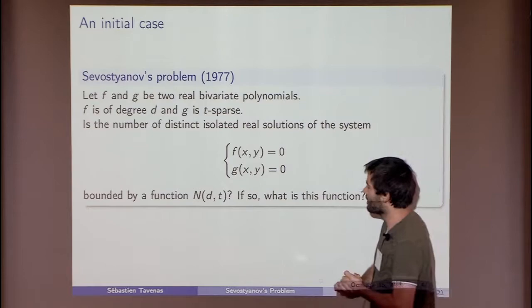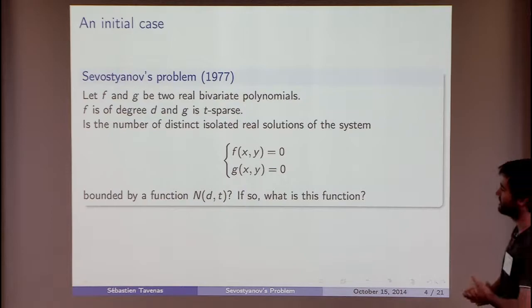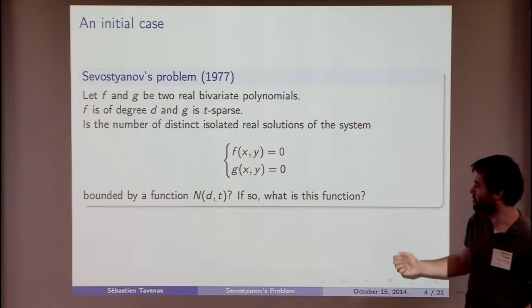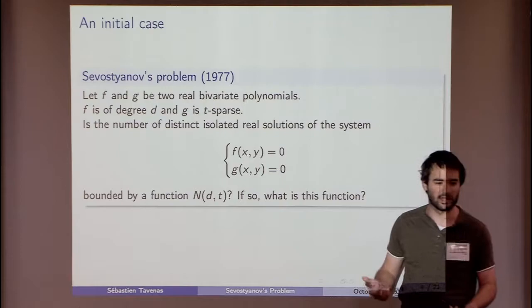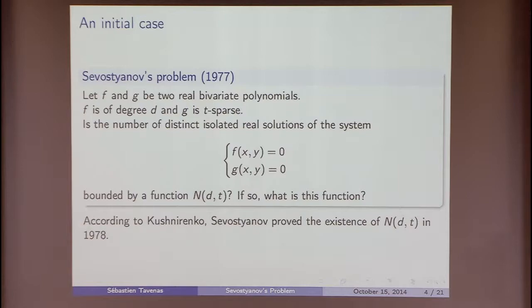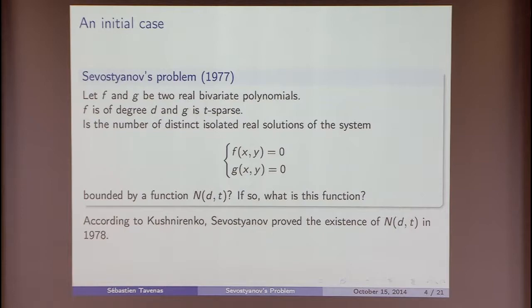There was an initial case by Sebastianoff who tried to solve the previous question. In fact, in the better case — a system with only two polynomials, where the first polynomial has degree bounded by d and the second polynomial has number of terms bounded by t — is it possible to find a bound depending only on d and t? According to Kushnirenko et al., Sebastianoff proved the existence of such a function. Sadly, he died some time after and the proof was lost.